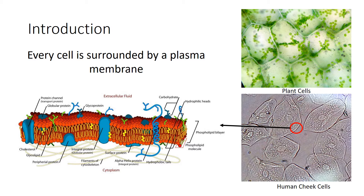And just to make this clear, even plant cells — like you can see those elodea leaves — they have a cell wall, and on the inside of that cell wall is a plasma membrane.